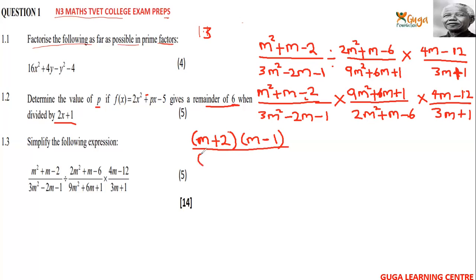For 3m² − 2m − 1: factors of 3m² give 3m and m; factors of 1 give 1 and 1. With the negative sign, we get (3m + 1)(m − 1). Here the sign is minus and plus, so one factor gets plus and the other gets minus.